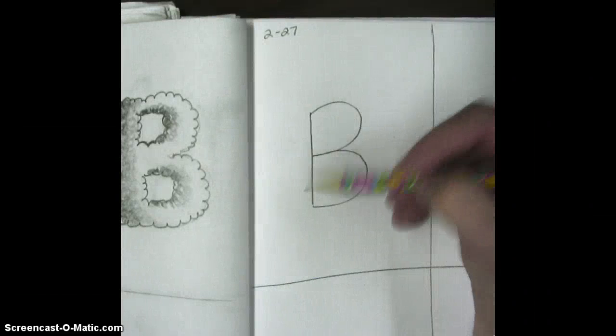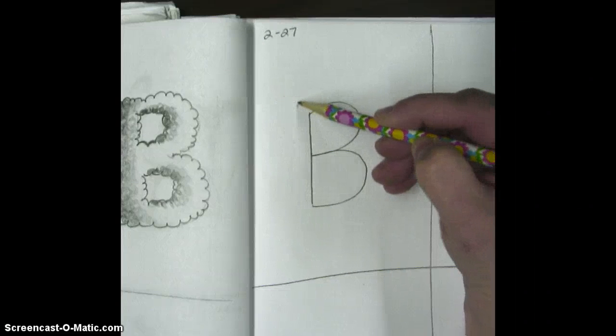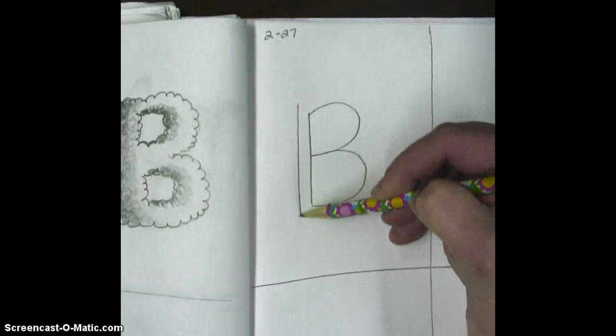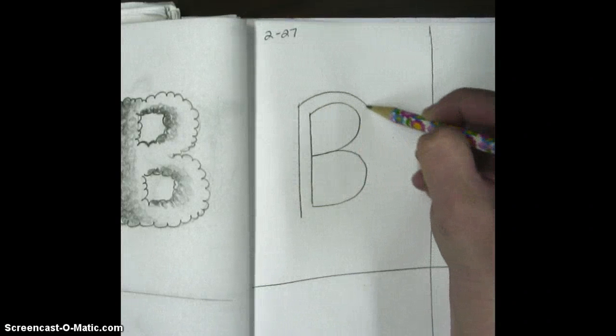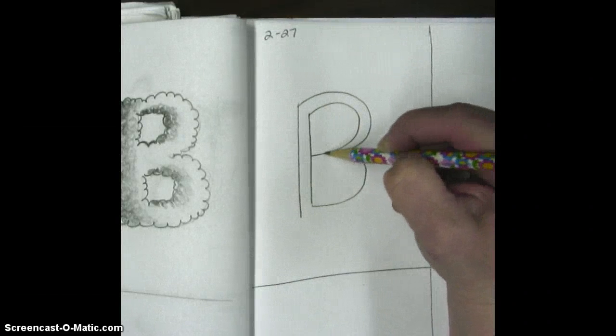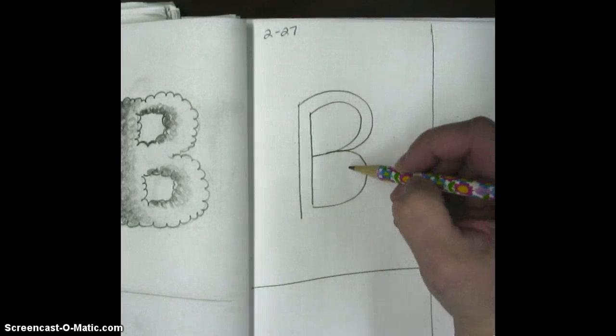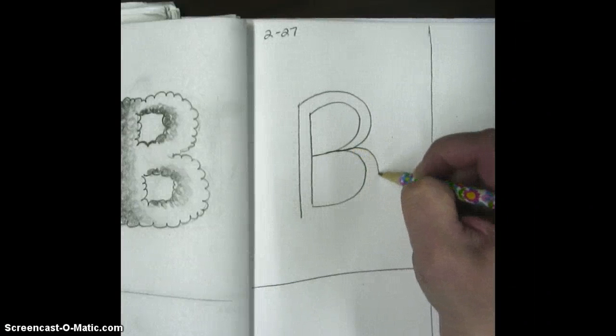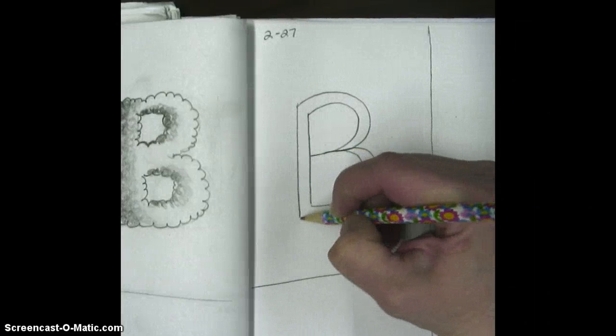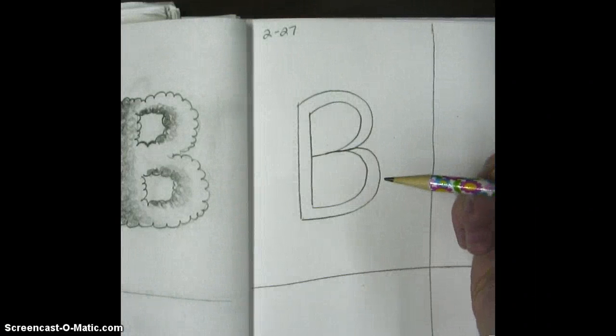Now we're going to outline all the way around it. So I'm going to come over a little bit, and I'm going to come down, and then I'm going to come over the top to the middle, bring it in. I'm going to come out like this, and down, and around. So that's the outside of the B. We still need the inside of the B.